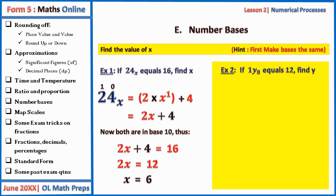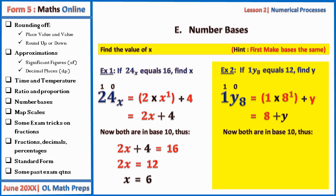Another example: if 1y base 8 equals 12, find y. Note that 12 is in base 10. Converting to base 10: 1 × 8¹ + y × 8⁰ = 8 + y. Setting equal to 12: 8 + y = 12, so y = 4.